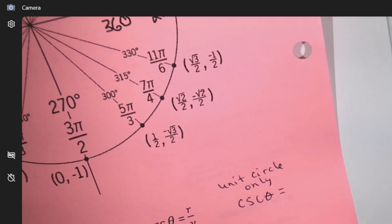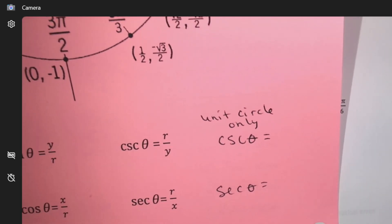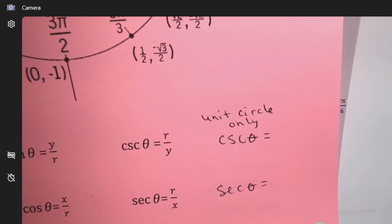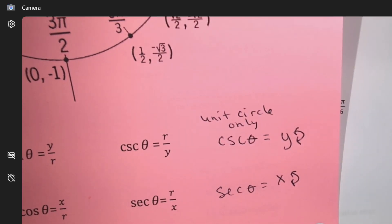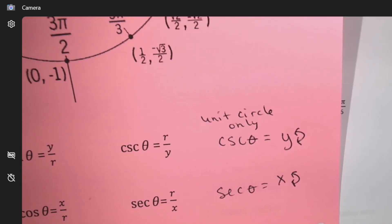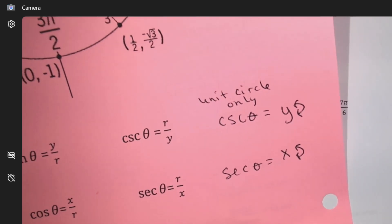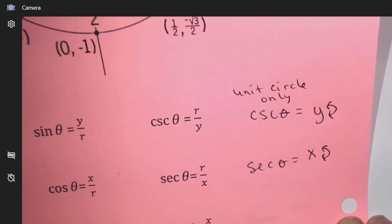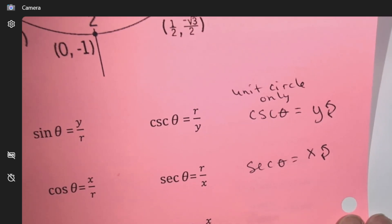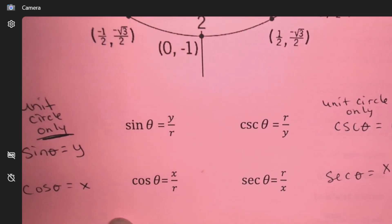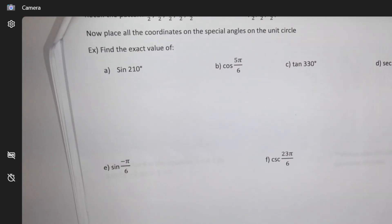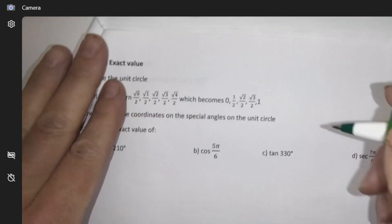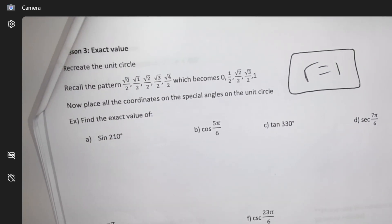Cosecant and secant — on the unit circle we can flip the y value around and flip the x value around, because on the unit circle all those things are in fractions, so flipping fractions works. You have this whole thing on the back of your formula sheet. Memorize all those ratios, and understand that for the unit circle only we can leave the r out because it's one. So this whole page deals with values from the unit circle where r is one — we can just drop it.